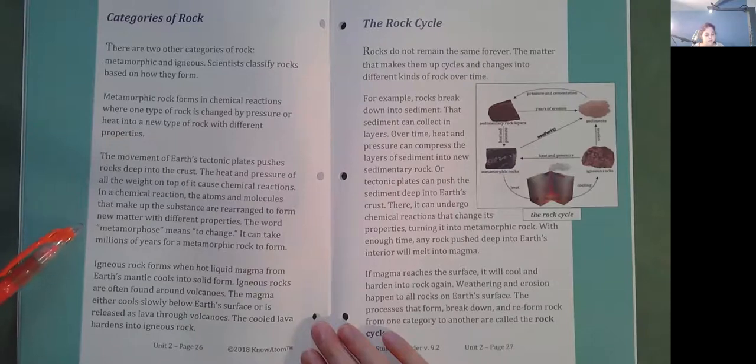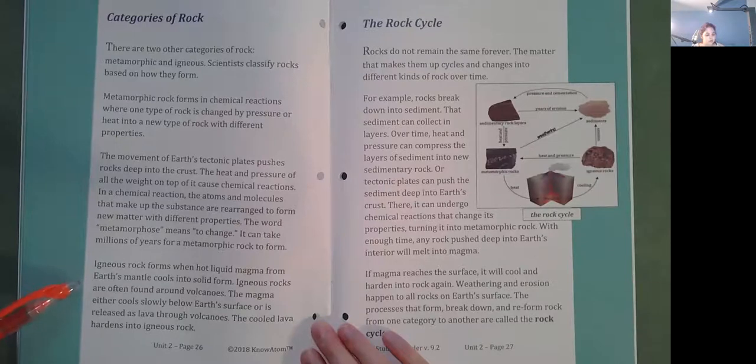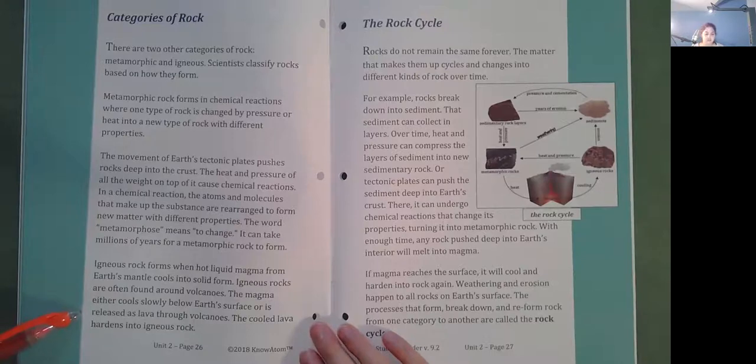It can take millions of years for a metamorphic rock to form. Igneous rocks form when hot liquid magma from Earth's mantle cools into solid form. Igneous rocks are often found under volcanoes. The magma either cools slowly below Earth's surface or is released as lava through volcanoes. The cooled lava hardens into igneous rock.